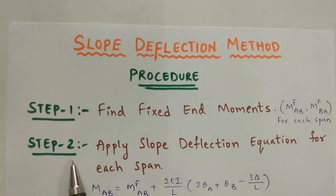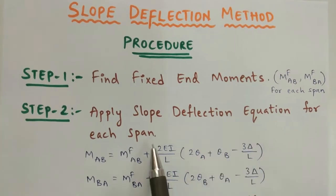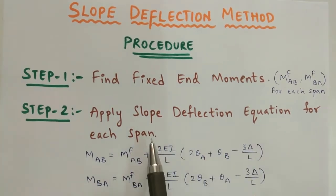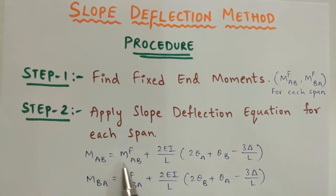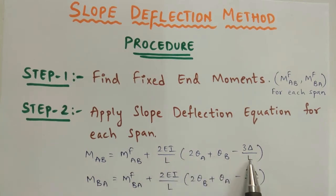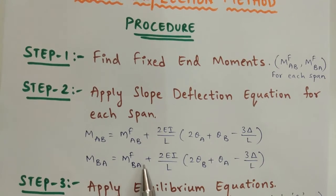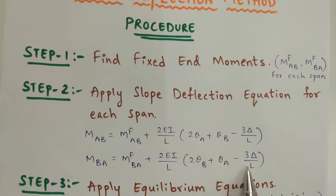Next, in step number 2, you have to apply the slope deflection equation for each span. MAB equals MFAB plus 2EI by L into (2 theta_A plus theta_B minus 3 delta by L). MBA equals MFBA plus 2EI by L into (2 theta_B plus theta_A minus 3 delta by L).